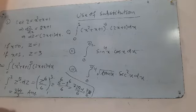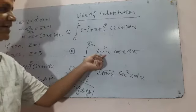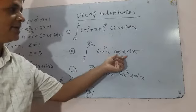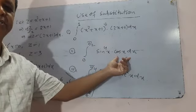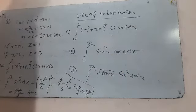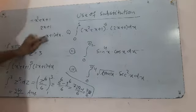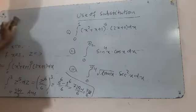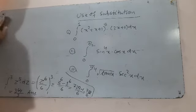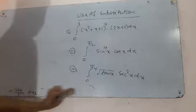For part (b), similarly take sin x as z (u). Then cos x dx becomes dz (du), since the derivative of sin x is cos x.